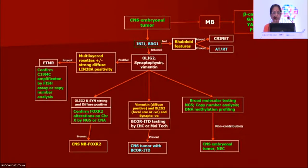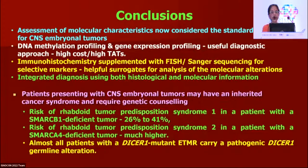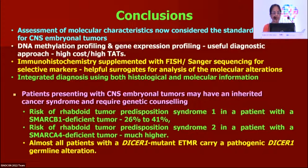To conclude: assessment of molecular characteristics is now the standard of care for CNS embryonal tumors. Per WHO 2021, DNA methylation profiling and gene expression profiling are the gold standards. However, in our country a single case costs more than 40,000 rupees and labs need six to eight cases per chip. Therefore, IHC supplemented with FISH or Sanger sequencing for markers of prognostic significance provides practical surrogate analysis of molecular alterations, enabling integrated diagnosis within our economic resources.